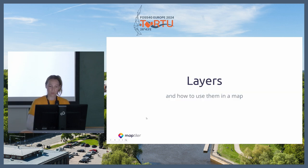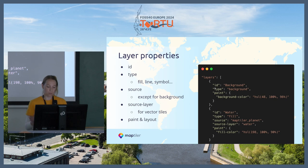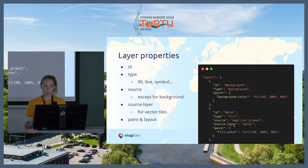Now let's get to the layers in the style JSON and how to use them in the map. I'll start with the layer properties. In the layers group, every layer needs to have an ID and type defined. Type can be fill, line, symbol, background, circle, heatmap, and so on. You need to specify source for every layer except for the background. Here, for example, the source is called map tile planet. Especially for vector tiles, you need to specify the source layer because they have more layers in the data source — for example, water, transportation, POI, nature, and so on.